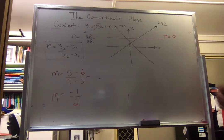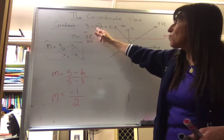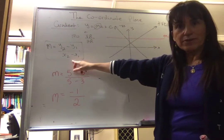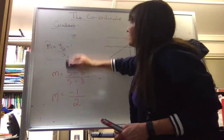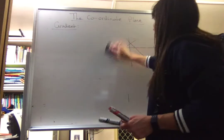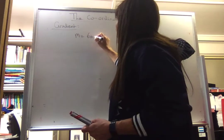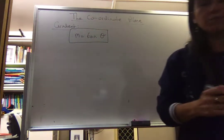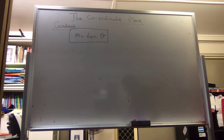To find the gradient, we can read it straight from the equation as long as we arrange it into the form y equals mx plus c, or we can use the formula. There's also another formula you probably haven't seen before: m equals tan θ. It's one of the slides you need to copy down. m equals tan θ is another way of finding the gradient.